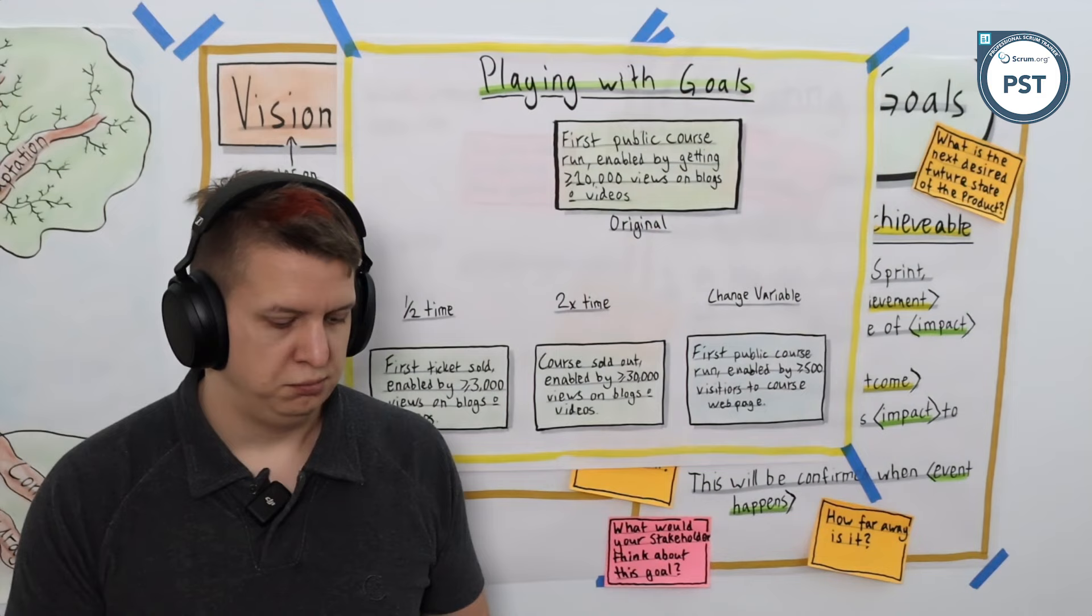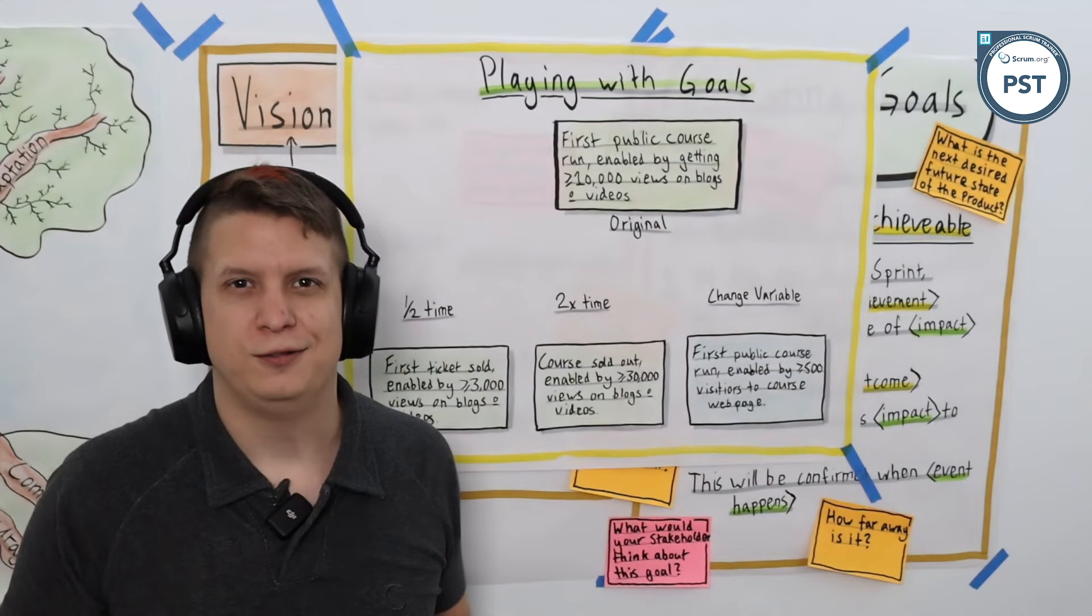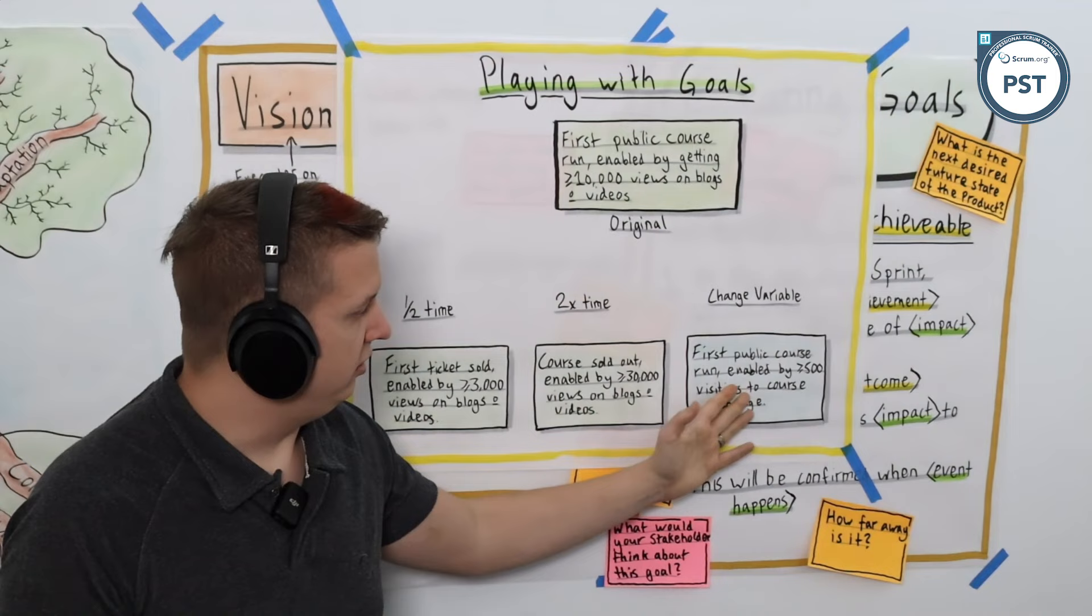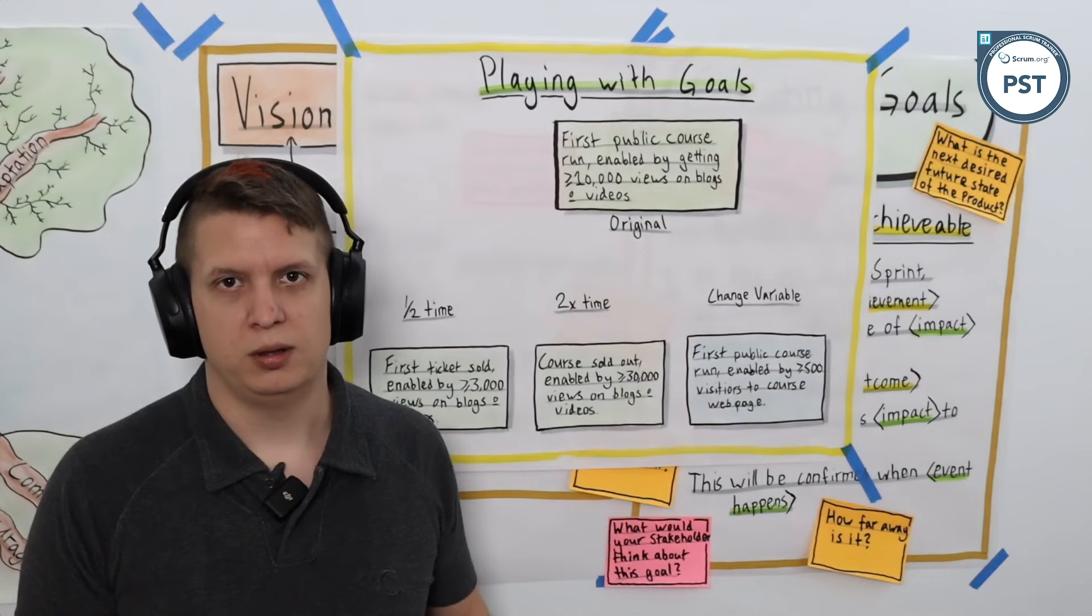And that means we could do anything that would enable us to do that. Maybe it's public speaking, maybe it's walking around in the street with a business card and a placard going 'go to my website.' Who knows what it could be. But we're tweaking the variable, which will drastically change the kind of work, the kind of outcomes we're looking for in the rest of our product backlog.